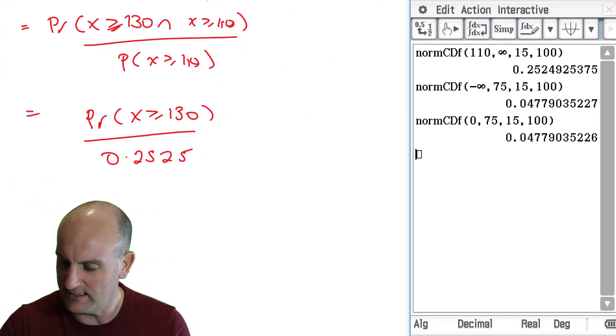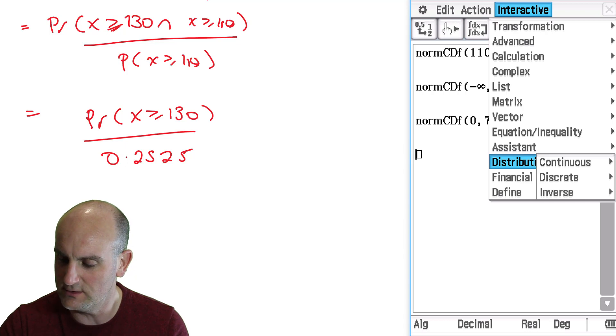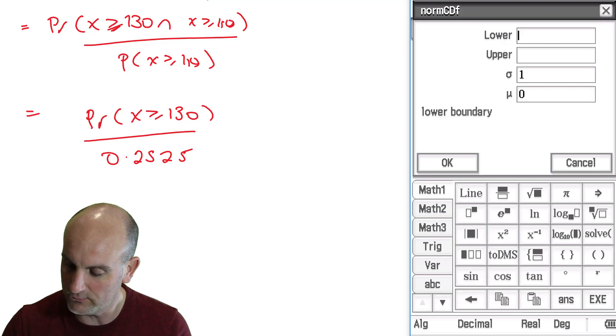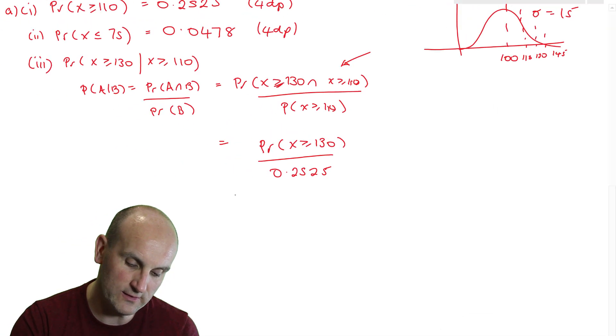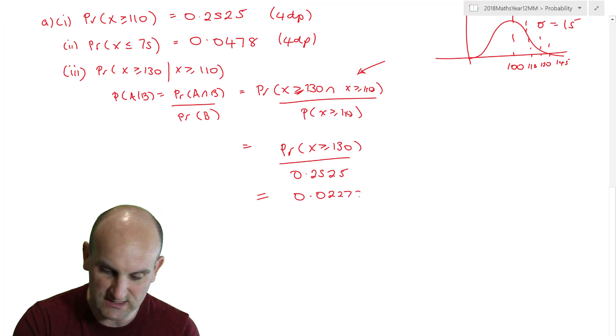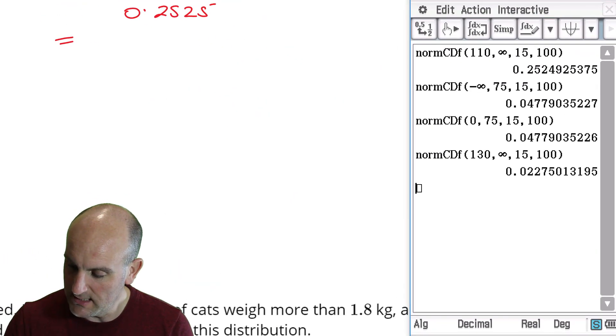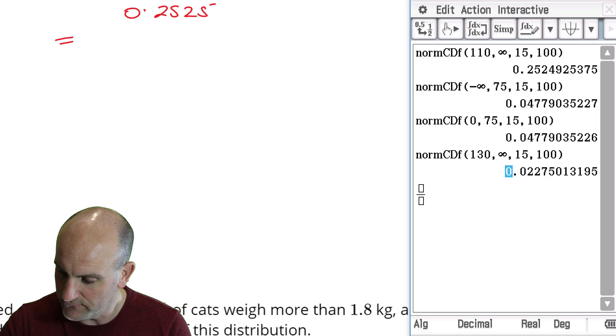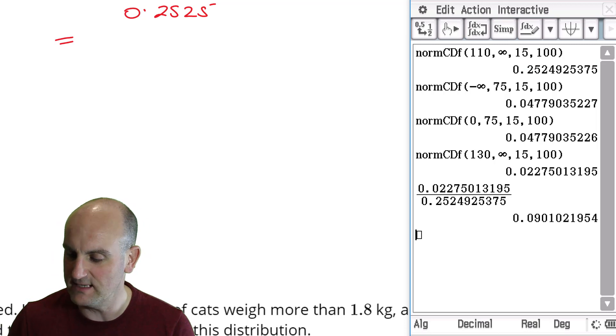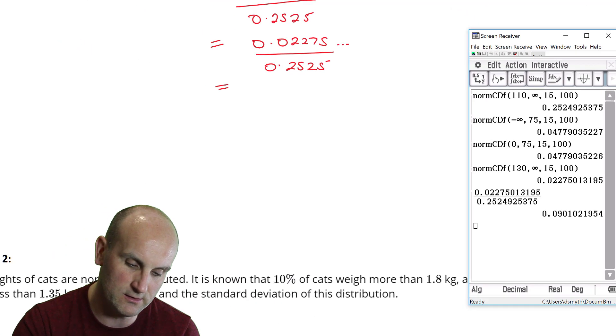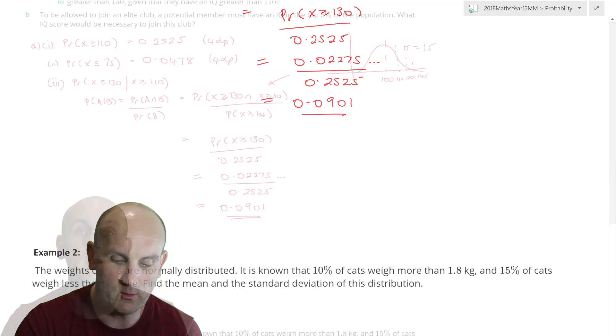So firing up my calculator. We're going to do interactive distribution continuous normal CDF. I want it to be greater than 130. We're going to do my upper limit as infinity. 15 and 100. That would come out to be 0.02275 divided by 0.2525. So that value is going to copy and paste into the top and there's my greater than or equal to 110 and out comes the fabulous value of 0.0901.